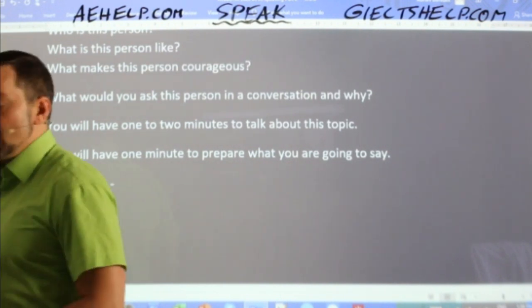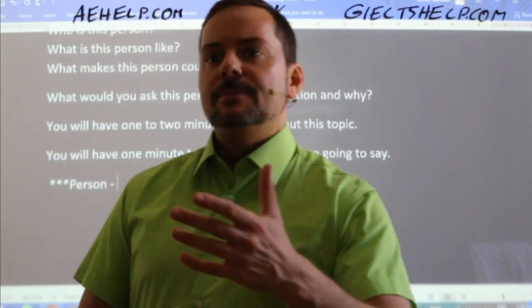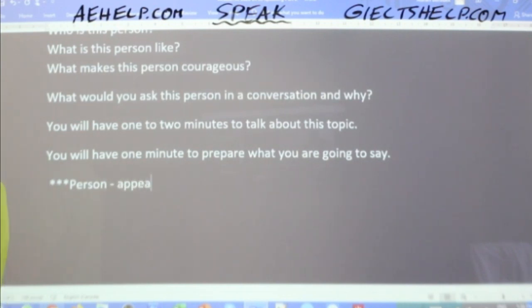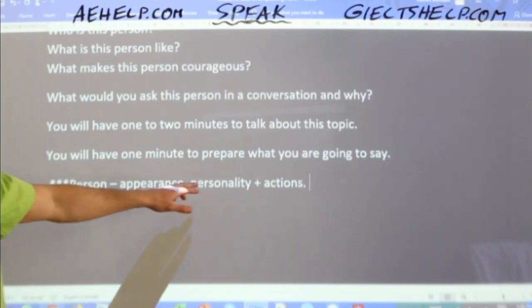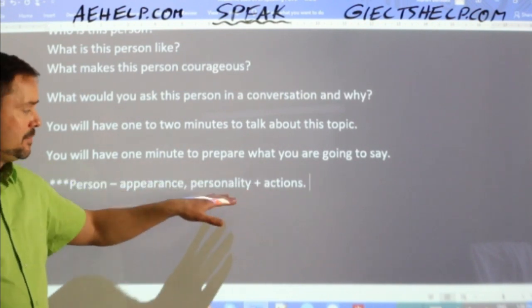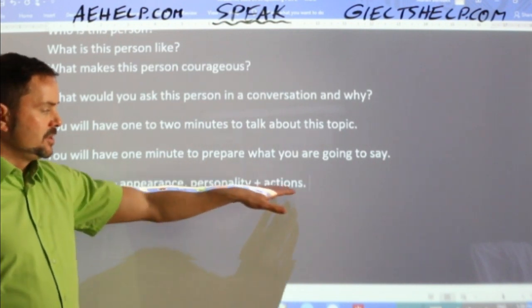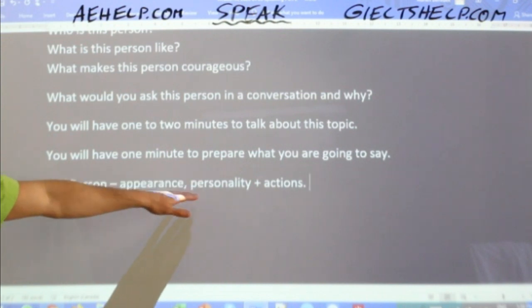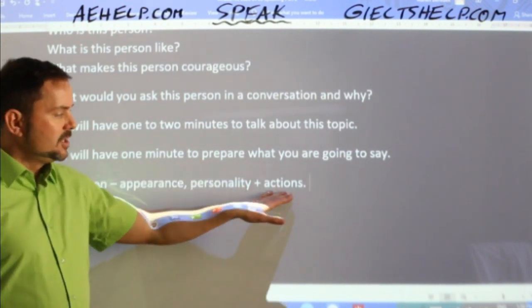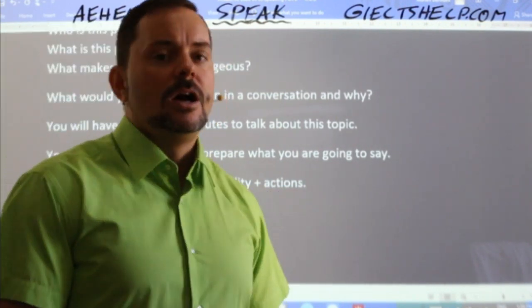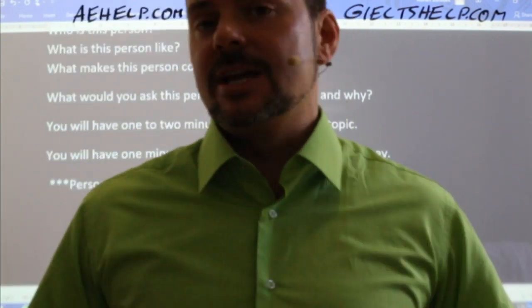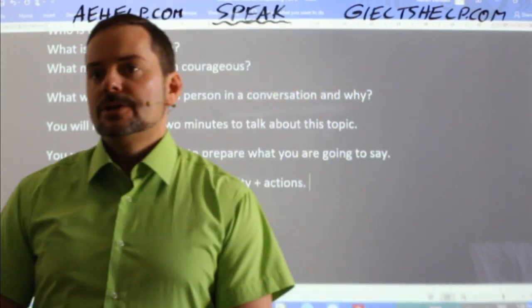Remember that personality and actions in most cases should not be separate. For each personality trait you mention, immediately explain the action that backs it up. For example, if you say they're kind — 'they always volunteer their Saturdays to help homeless people.' So always back it up. Hamon put it well: mention their relation to you, their abilities, personality traits, and actions corresponding to those traits.